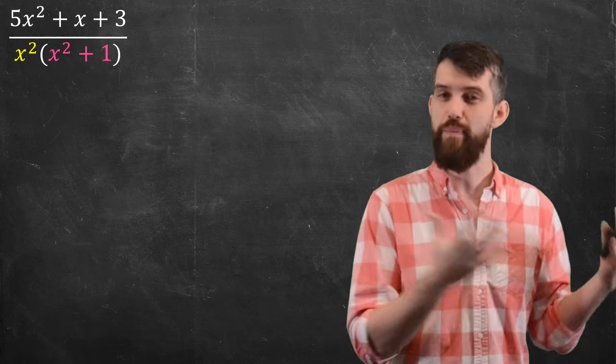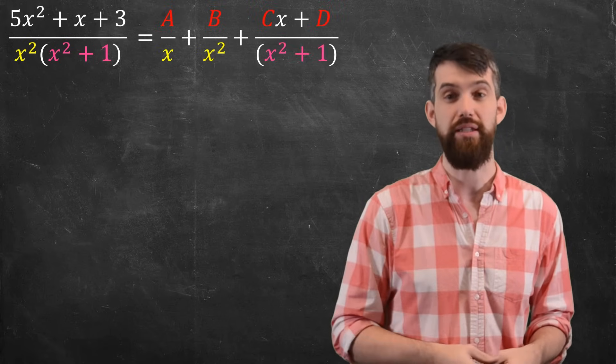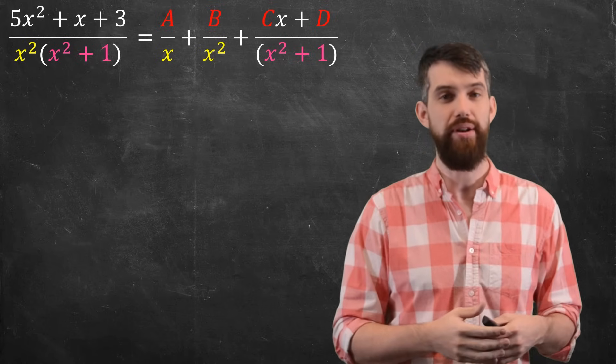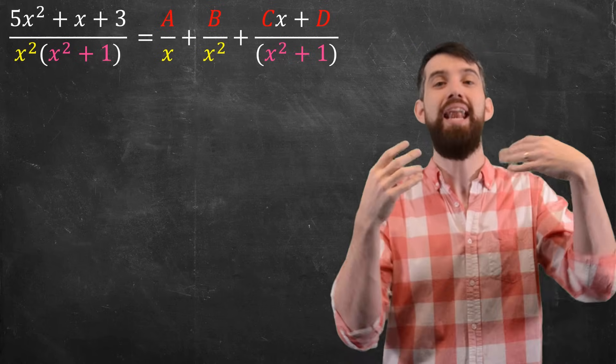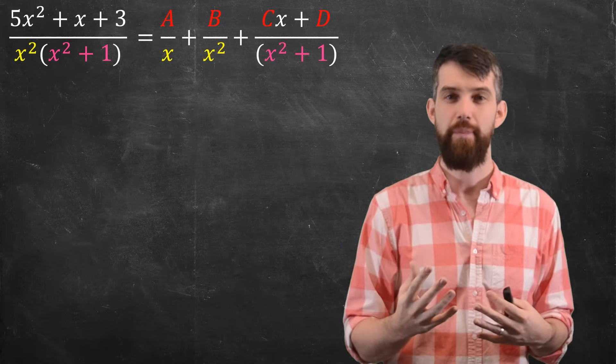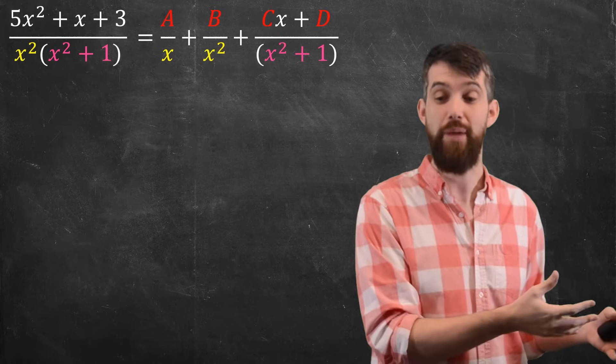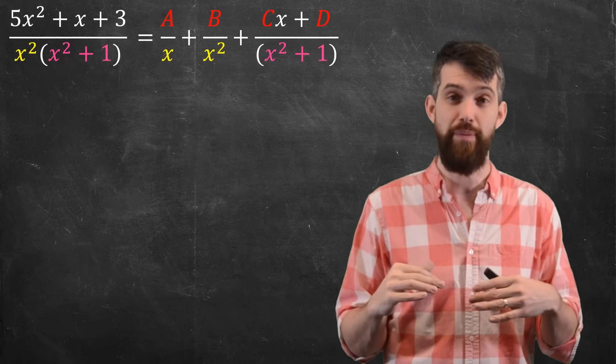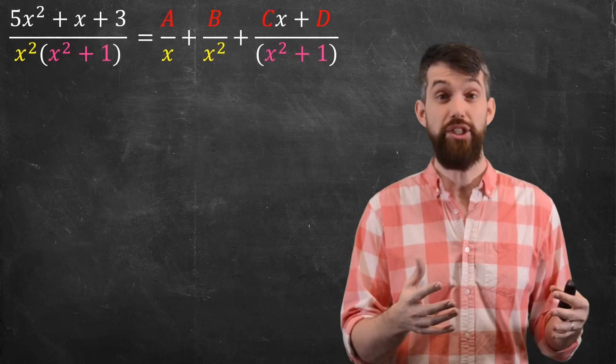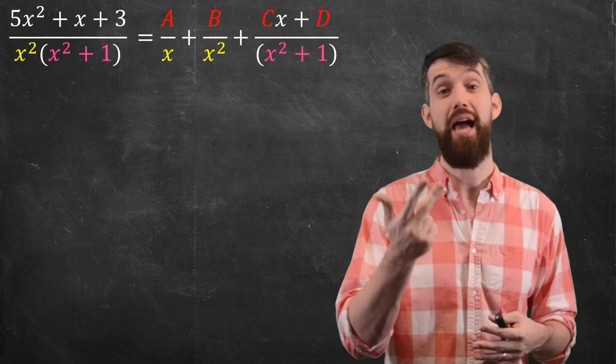What is the guess for my partial fraction decomposition? Well, it's going to have four different constants. For the repeated linear, the x squared, I put an x squared term and an x term. So an a over x and a b over x squared. And then for the irreducible quadratic, I have to add a linear term up top. So I put the irreducible quadratic in the bottom and then a cx plus d up on the top. This is my decomposition, but now I have to try to figure out what is the a, b, c, and d.